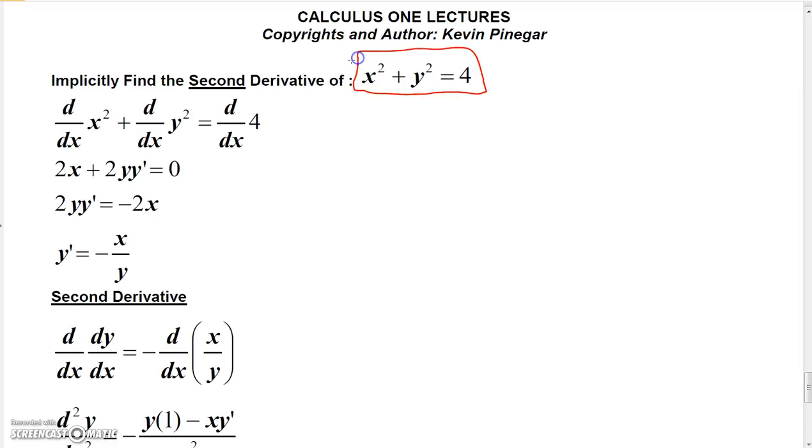Now, let's find the first derivative of this implicitly. So we can take the derivative of x squared and just get 2x. The derivative of y squared with respect to x is 2yy prime, and the derivative of 4 with respect to x is 0.